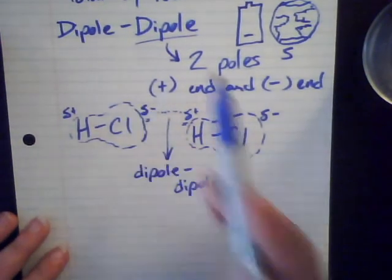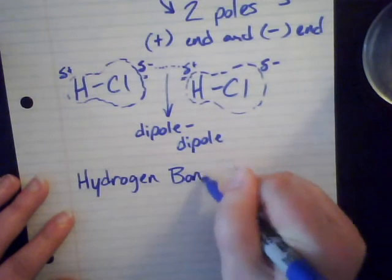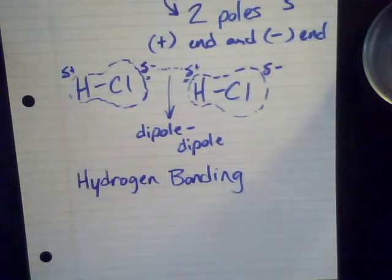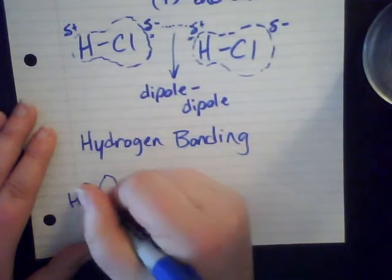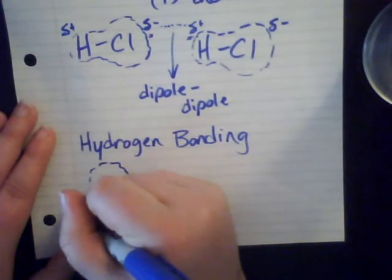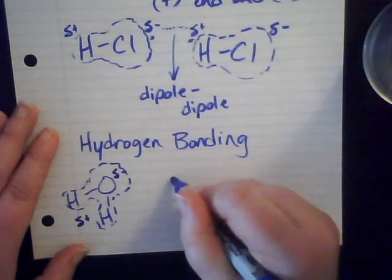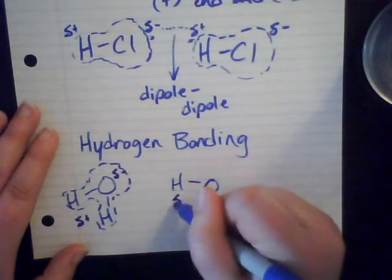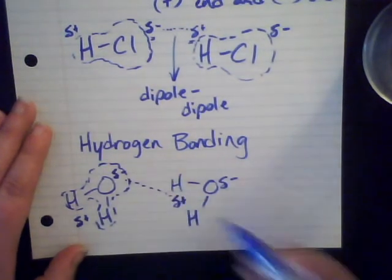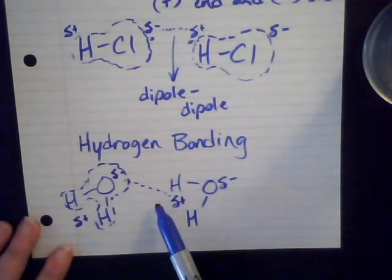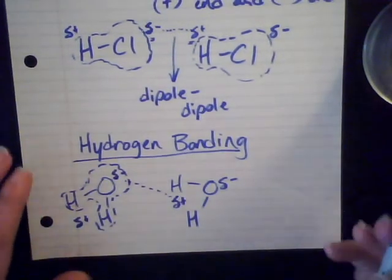There's a specific type of dipole-dipole that is called hydrogen bonding, and it's especially important when we talk about water in more detail. Water is polar and has this kind of cloud with a fat concentration on the oxygen — a slight negative side and a slight positive side. If we bring another water molecule in, there's going to be an attraction between the hydrogen side of one and the oxygen side of the other. That's a dipole-dipole attraction, but it's got something specific going on. Hydrogen bonding is a specific type of dipole-dipole.